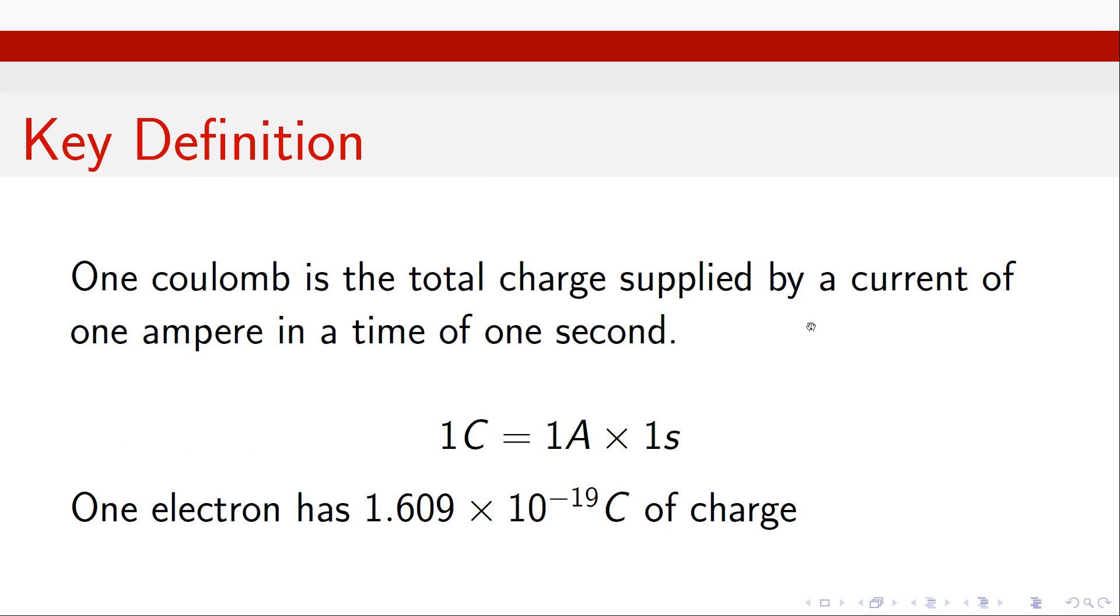With that, we can now define how we measure charge. How much charge an object or a particle has is measured in Coulombs. One Coulomb, we define it in the context of an electrical circuit. One Coulomb is the total charge supplied by a current of 1A in a time of one second. In a moment, we'll have a look at current and make sure we understand exactly what that is. One Coulomb is 1A for one second. One Coulomb is 1A times one second.